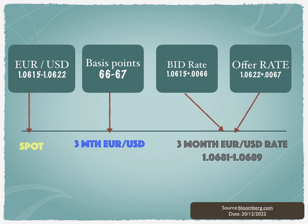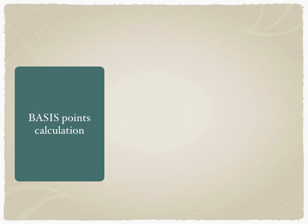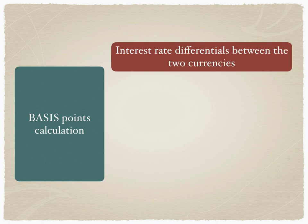The bid/offer rate for the three-month EUR/USD forward is 1.0681 / 1.0689. The CFO of Marvel Inc. is looking at the rate of 1.0681 and deciding whether they should take a forward cover at that rate. Let's understand the basis points calculation — these are available on any Bloomberg screen and represent the interest rate differentials between the two currencies.